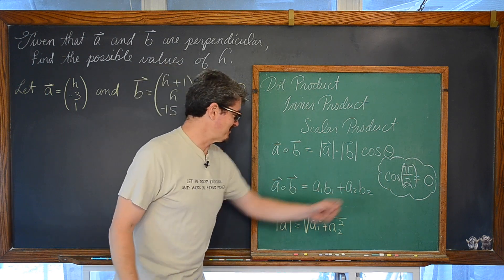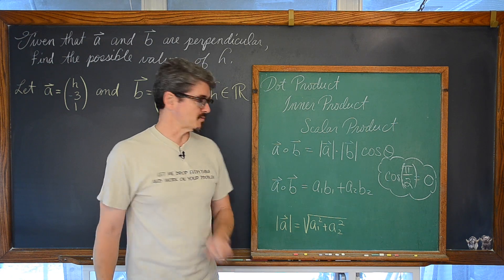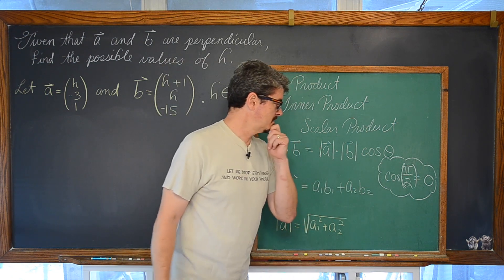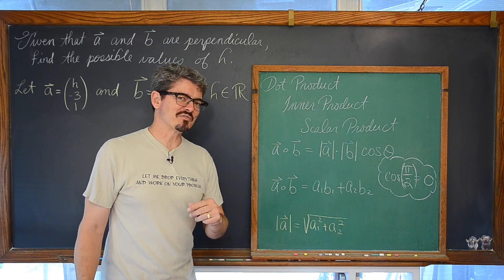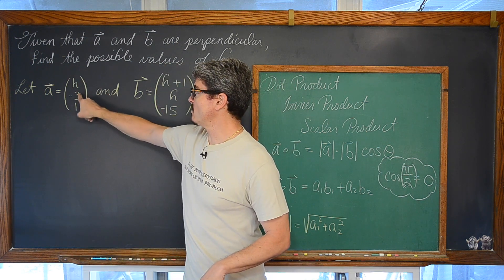But we are going to be using this definition here. The dot product of two vectors A and B is equal to the product of the horizontal components plus the product of the vertical components. Well, these are the formulas if you are in two space. But our problem is in three space with movements along the x, y, and z axis.